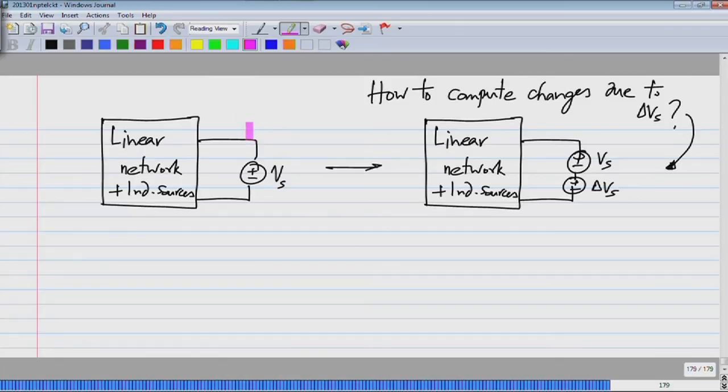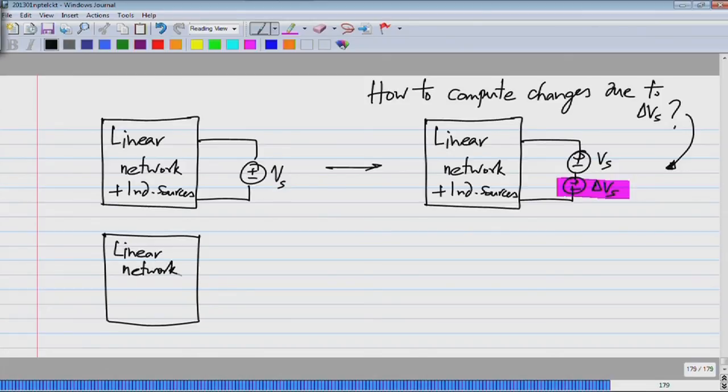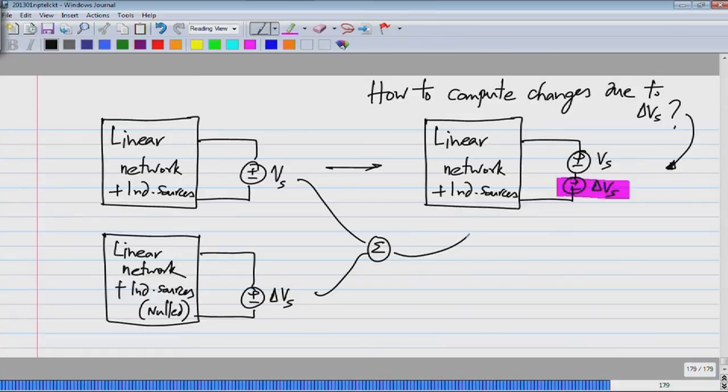Now, in this particular case when we originally calculated, everything is active except this one - you can think of it as the case with delta Vs equal to 0. What I have to do is take the null circuit - this is null and Vs is also null - and I have only delta Vs acting on the network. If you superpose these two, if you take the sum of these two solutions, you will end up with the solution to that one.